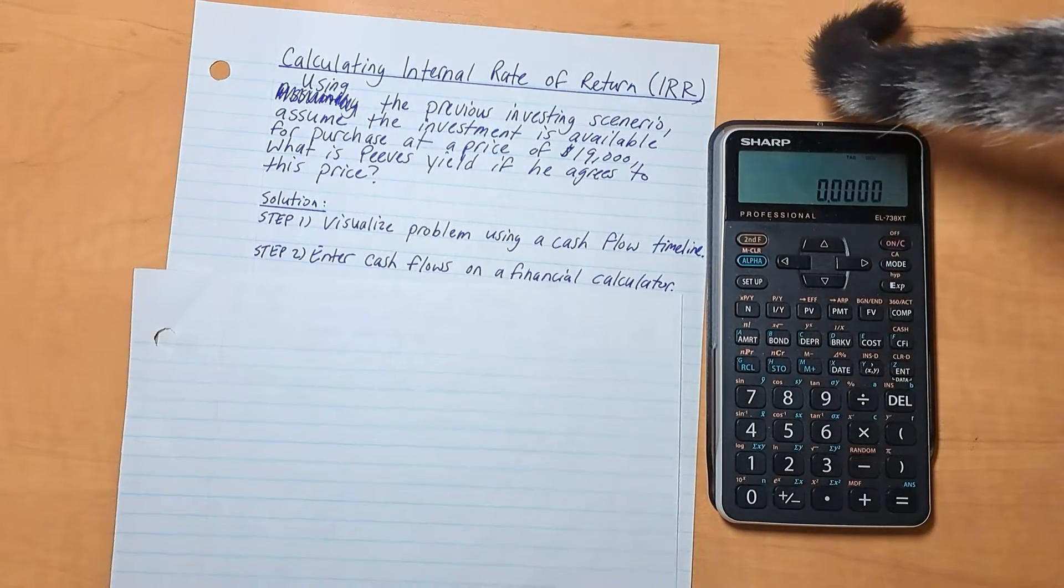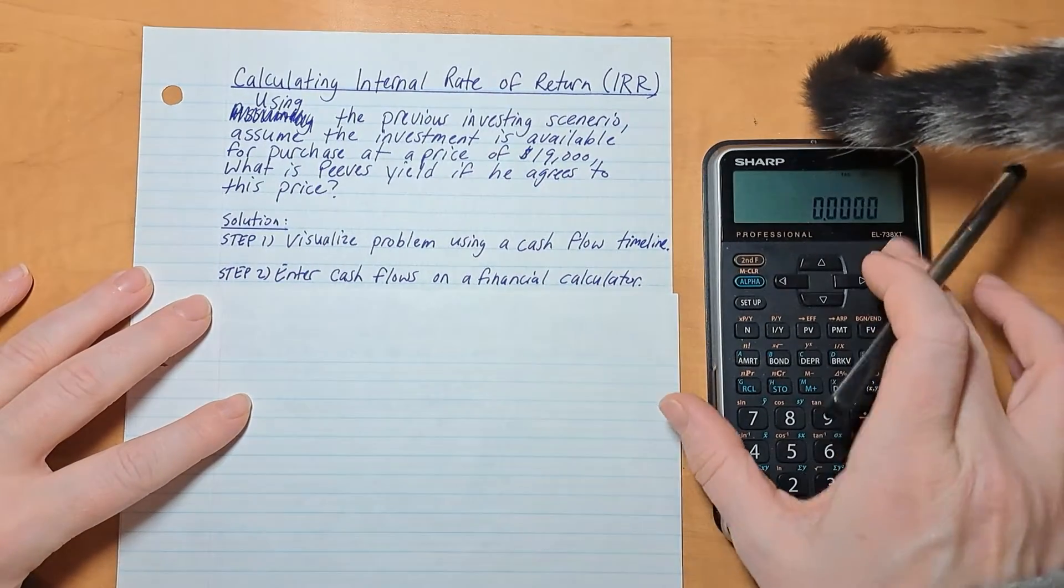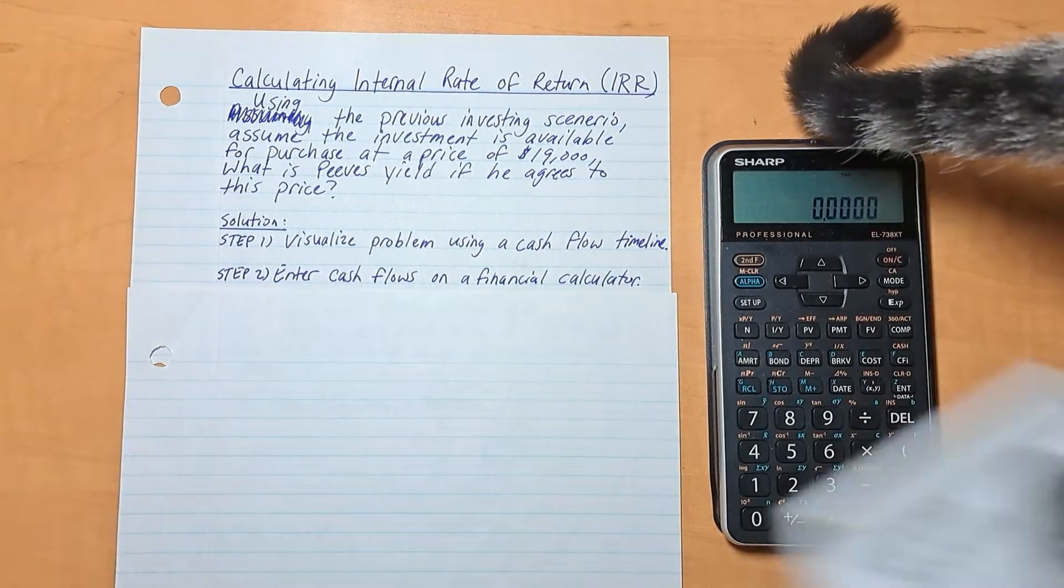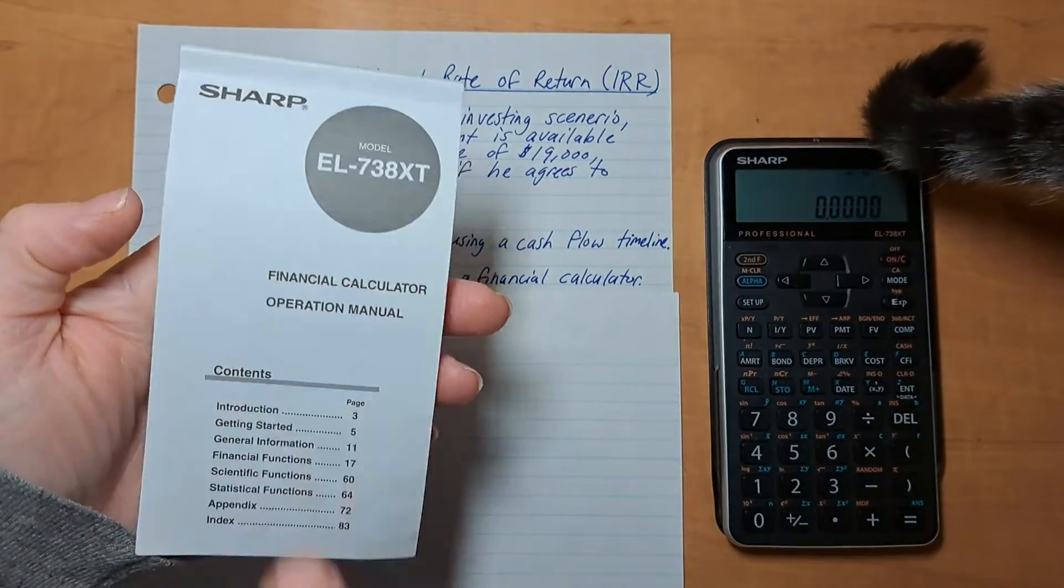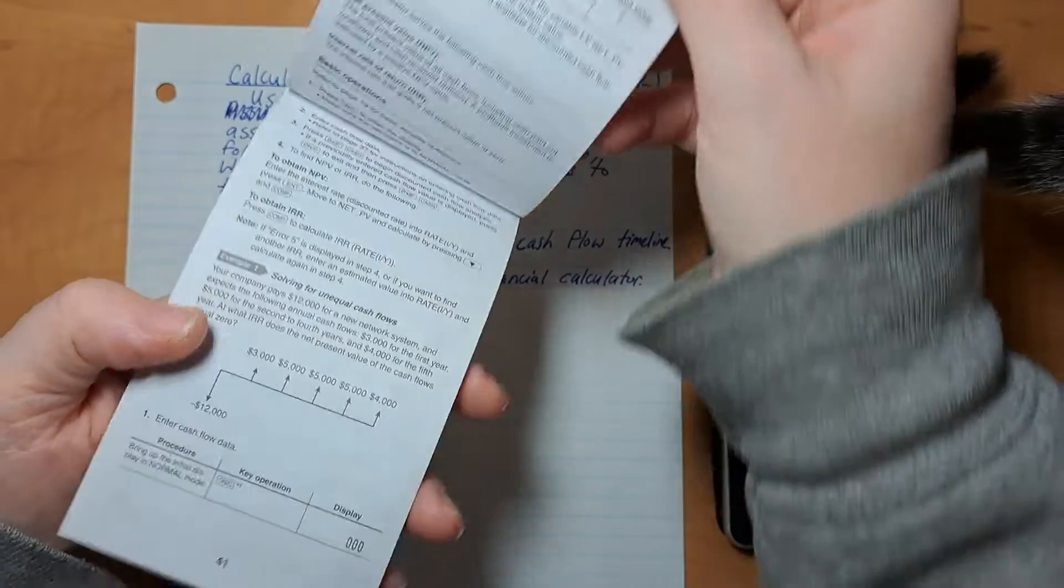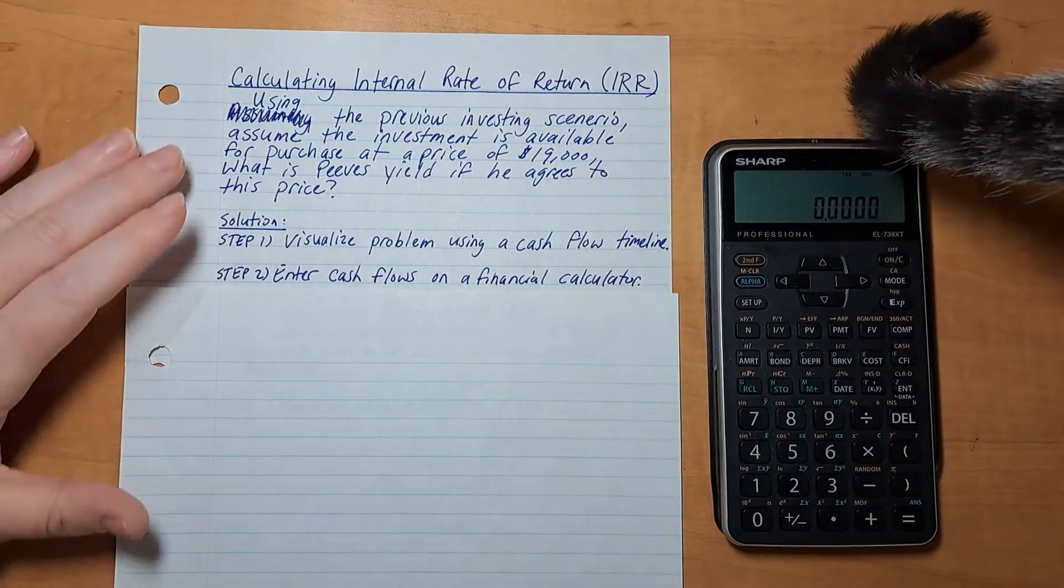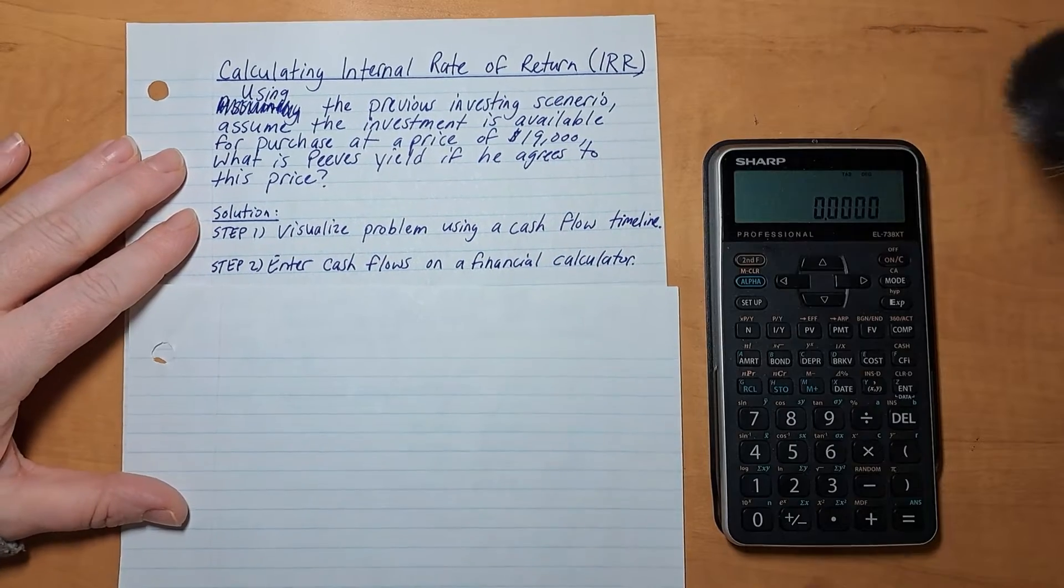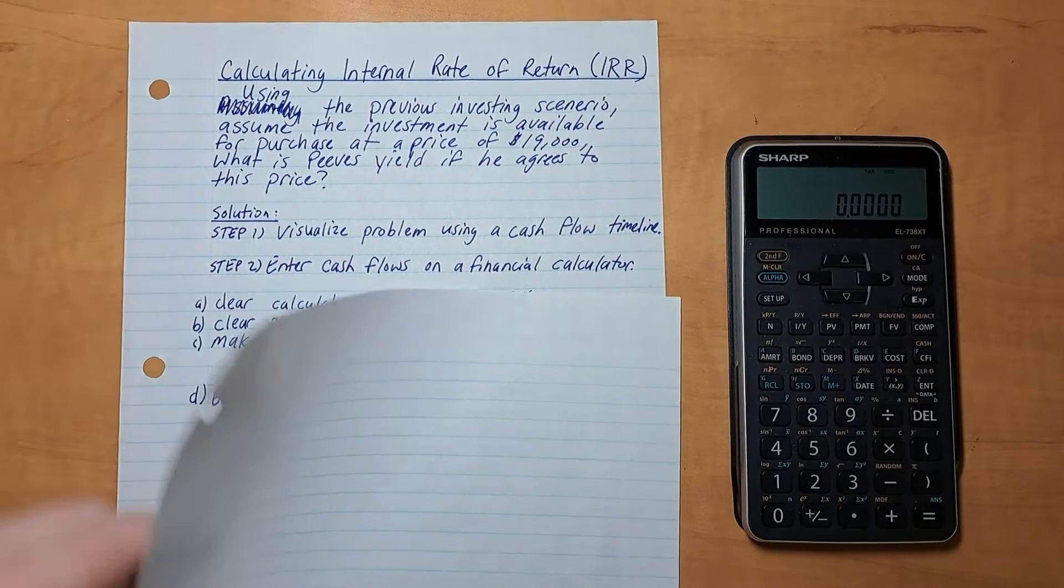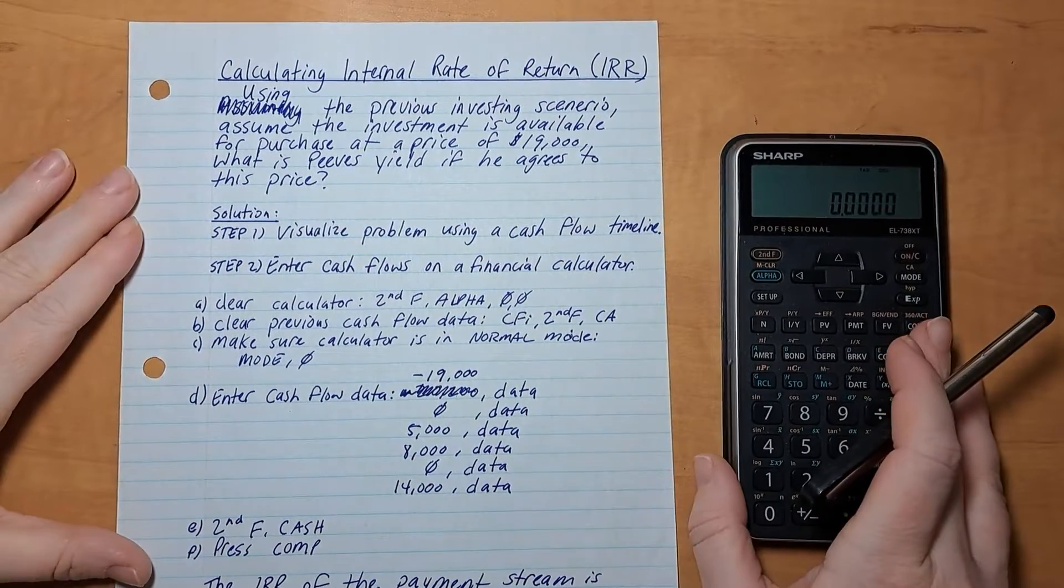Now we enter the cash flows on a cash flow calculator, and I highly recommend that you follow your manual if you still have it. Your financial calculator manual is very handy for performing these types of calculations because each calculator is a little bit different. Okay, so first things first, we want to clear the calculator.